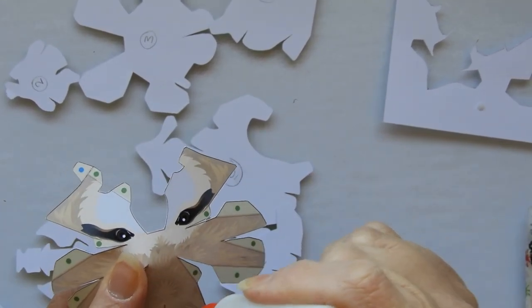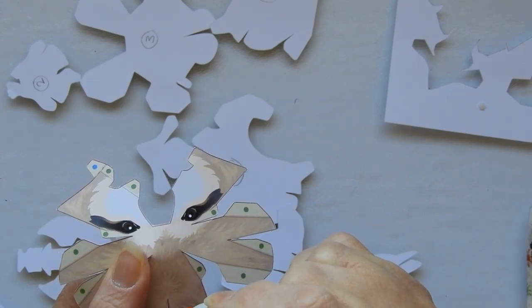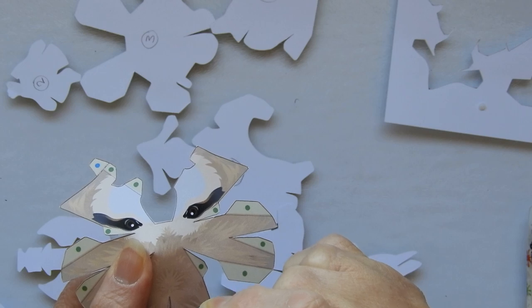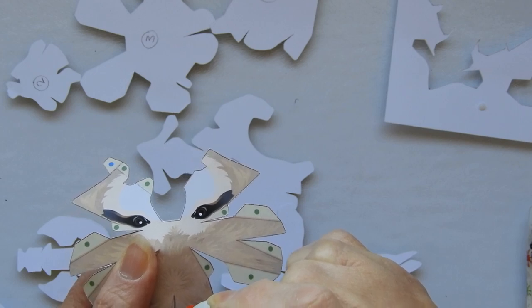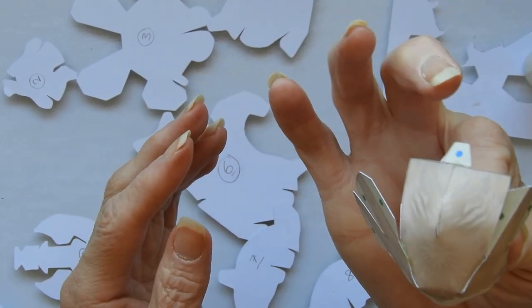I'm just going to stick that tab under there because if you do the outside and then you do the inside you're just going to make it rather difficult for yourself. Now I'll just go around putting the glue where it's needed and overlapping the pieces. As you can see it's gradually getting to be three-dimensional.